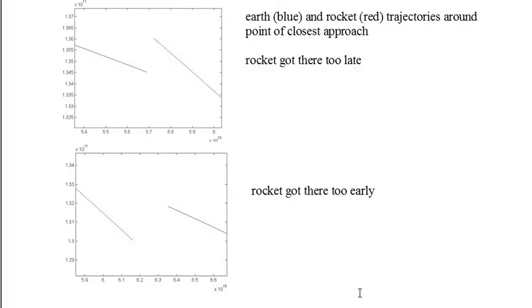So let's see how it works. The top graph shows the Earth's trajectory in blue and the rocket's trajectory in red around the point of closest approach, and we can see that since the rocket is behind the Earth, the rocket got there too late. So we need to adjust our boost parameters to get the rocket to the Earth's orbit sooner. We do that and we get the graph at the bottom of the page, and we see that now the rocket trajectory in red is ahead of the Earth's trajectory in blue, so this time the rocket got there too soon. So we can adjust the parameters the other way.